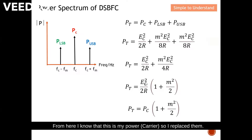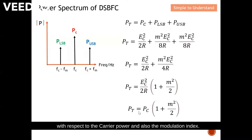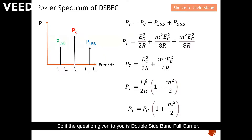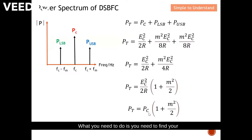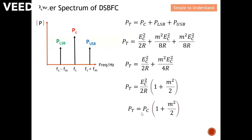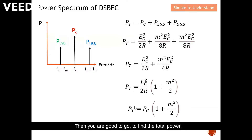Recognizing that Ec² / 2R is the carrier power Pc, we can express the total power in a simplified form: Pt = Pc × (1 + m²/2). This is the total power formula for double sideband full carrier. If a question specifies double sideband full carrier, you can use this formula — all you need is the carrier power and the modulation index.